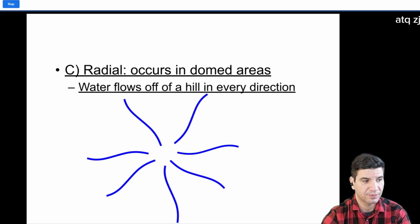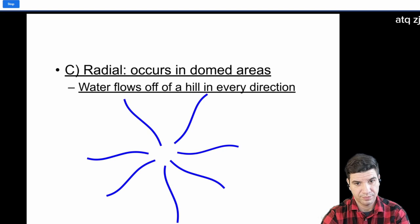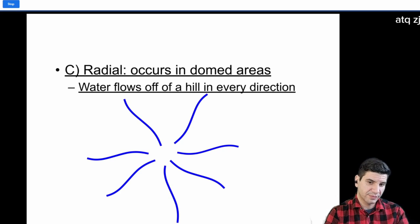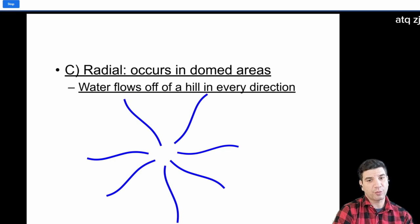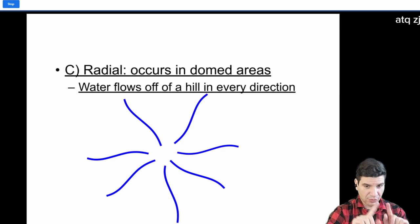And then, we have our radial pattern, which occurs in a domed area. So, picture a hill, and you're looking at it from above. It pretty much has that, like, I don't know, maybe like a spider web effect. Yeah, starburst, however you want to call it. So, I always think of it as radial, as in radial tires for your car. They have the metal bands that go around the outside. Radius, you know, from one side to the other.